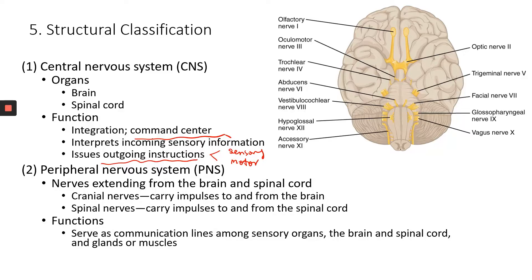The motor division. The outgoing structures are sent in the form of electrical impulses through motor nerves into the effector organ — it could be a muscle, it could be a gland. The PNS consists of nerves.